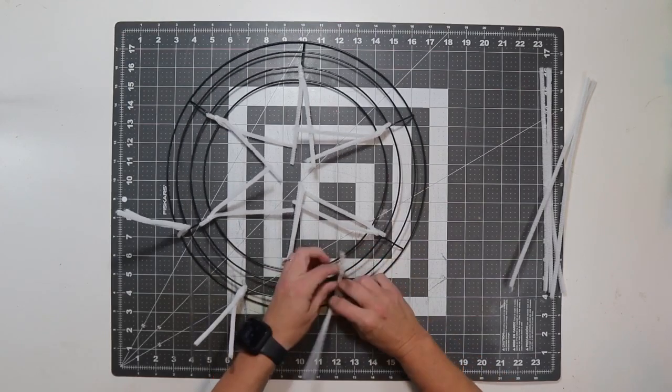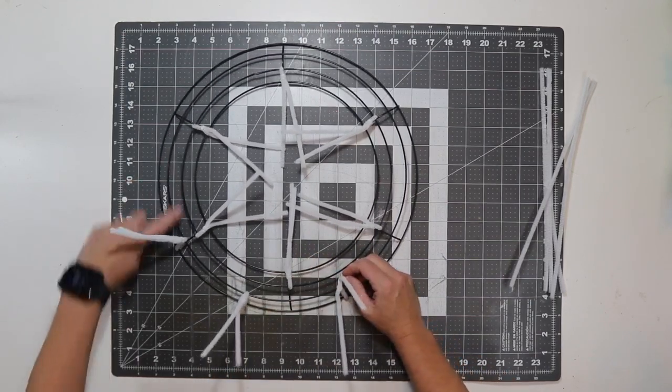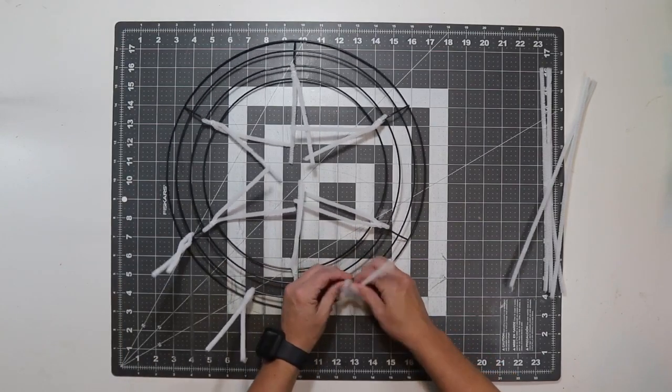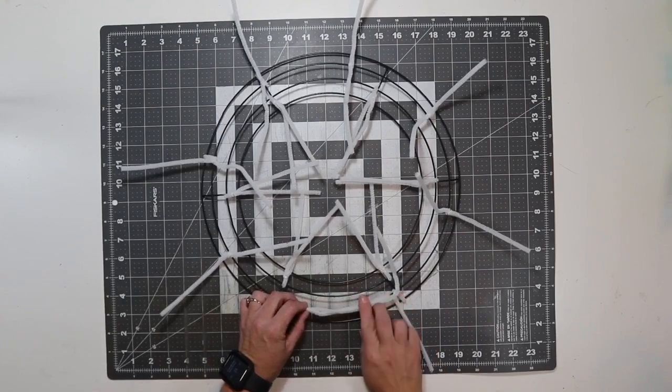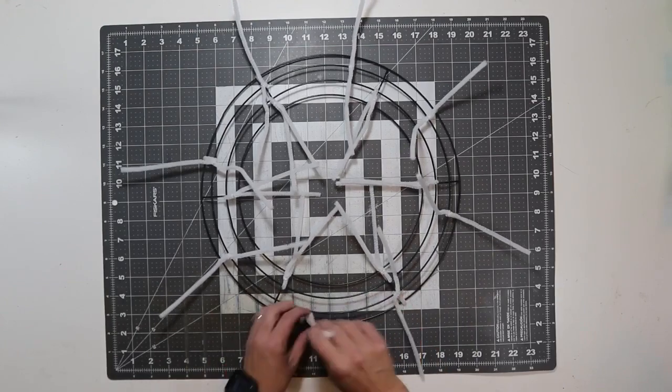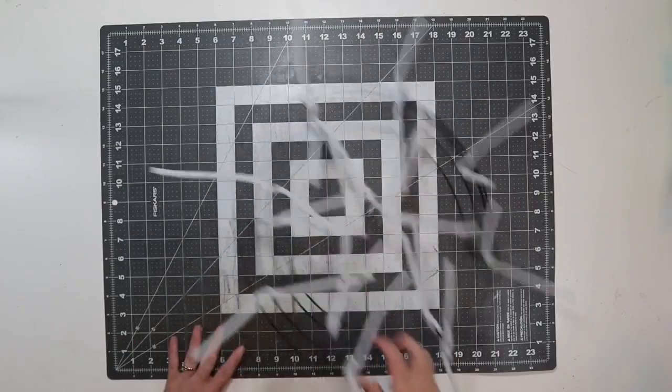When you put your last pipe cleaner on, it should line up with this one where it does that. If it doesn't, if it's a little bit off, that's not a huge deal. So you can see here the last one, it lines up with that one. If it's a little bit off, no one's gonna be able to tell.